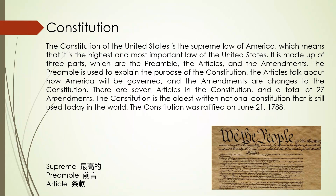正常速度. The Constitution of the United States is the supreme law of America, which means that it is the highest and most important law of the United States. It is made up of three parts, which are the preamble, the articles, and the amendments. The preamble is used to explain the purpose of the Constitution, the articles talk about how America will be governed, and the amendments are changes to the Constitution. There are seven articles in the Constitution and a total of 27 amendments. The Constitution is the oldest written national constitution that is still used today in the world. The Constitution was ratified on June 21st, 1788.